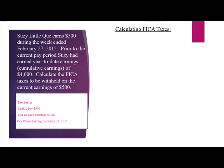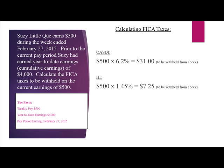The facts: weekly pay $500, year-to-date earnings of $4,000, pay period ending February 27, 2015. For OASDI: $500 of current earnings multiplied by 6.2% equals $31 to be withheld from the employee paycheck. The HI tax is $500 multiplied by 1.45%, which equals $7.25 to be withheld. Total FICA to be withheld is $38.25, and the employer will also match this amount.